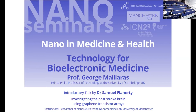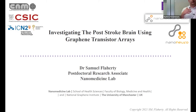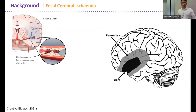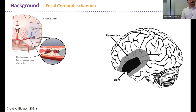Thank you very much. Welcome, everybody. So I'm investigating the post-stroke brain using graphene transistor arrays. Stroke is one of the largest contributors to mortality in the world, and 80% of strokes are ischemic — termed focal cerebral ischemia. This is where you have a clot in a vessel in the brain that prevents oxygen and nutrients reaching a particular region, and this focal area turns into the core, which is an area of dying tissue.